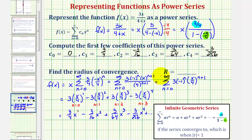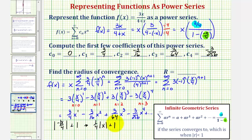Now we need to find the radius of convergence. The power series converges when the absolute value of r is less than 1, and in our case r equals negative x divided by 4. So the series converges when the absolute value of negative x over 4 is less than 1. Since the absolute value of negative 1/4 is 1/4, this becomes one-fourth times the absolute value of x is less than 1. Multiplying both sides by 4 gives the absolute value of x is less than 4, so the radius of convergence is 4.